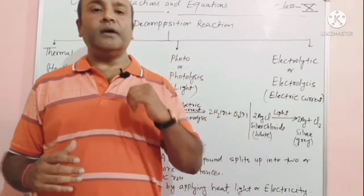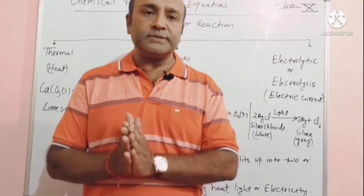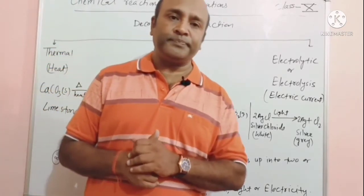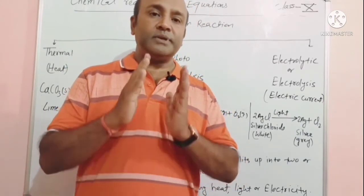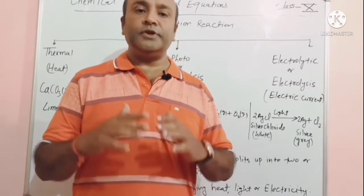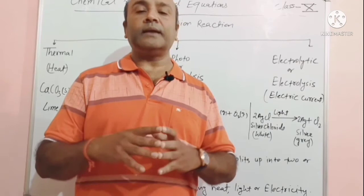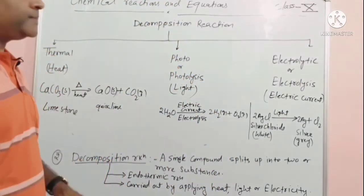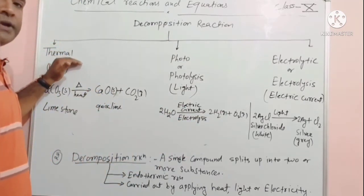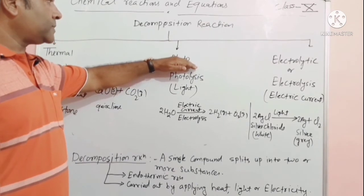Decomposition reactions are classified into three groups. First is thermal decomposition reaction, which takes place when heat energy is supplied. Second is photo decomposition reaction, carried out in the presence of light. Third is electrolytic decomposition reaction, carried out in the presence of electric current.